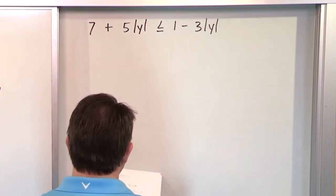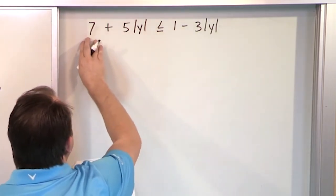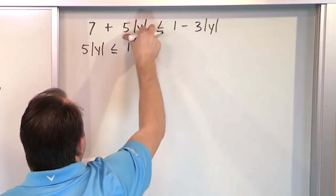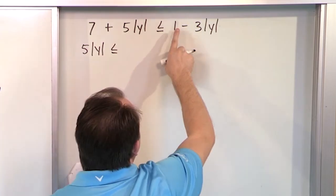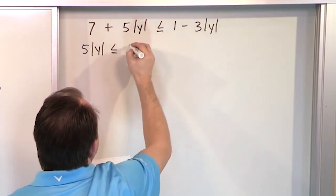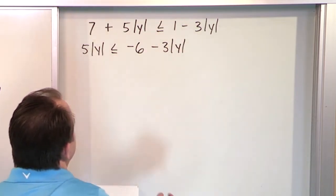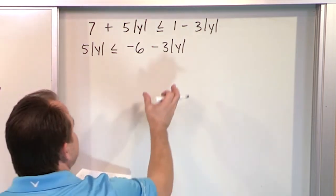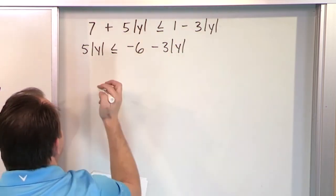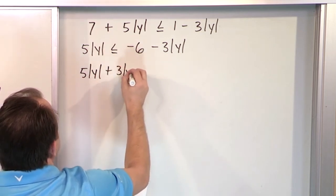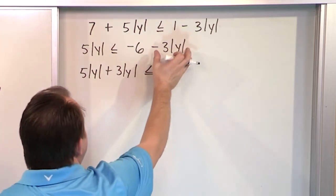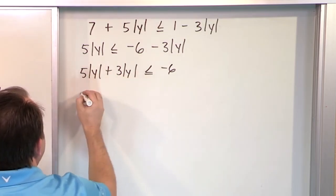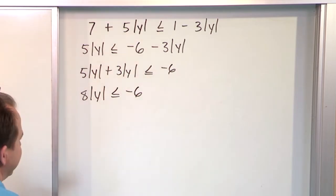First, move the 7 over by subtracting 7 — I'll have 5 times absolute value of y on the left. On the right, 1 minus 7 is negative 6, and the 3 times absolute value of y stays. So subtracting 7 gives us 5|y| less than or equal to negative 6 minus 3|y|. Now move the 3|y| over by adding it: 5|y| plus 3|y| less than or equal to negative 6. Same variable, same absolute value — 5 plus 3 is 8 — so 8 times absolute value of y less than or equal to negative 6.